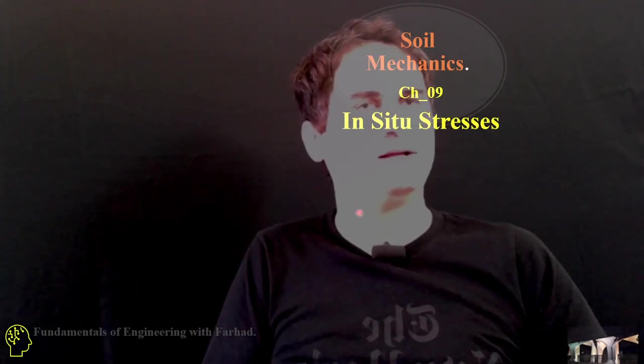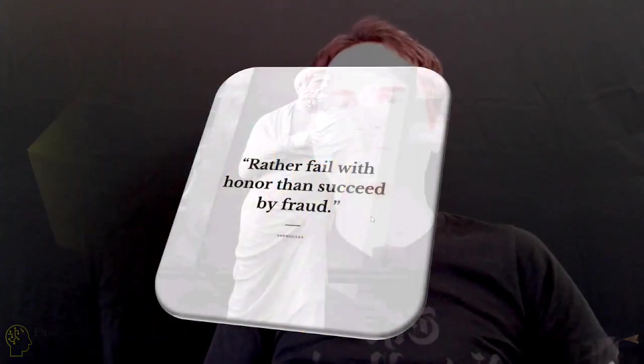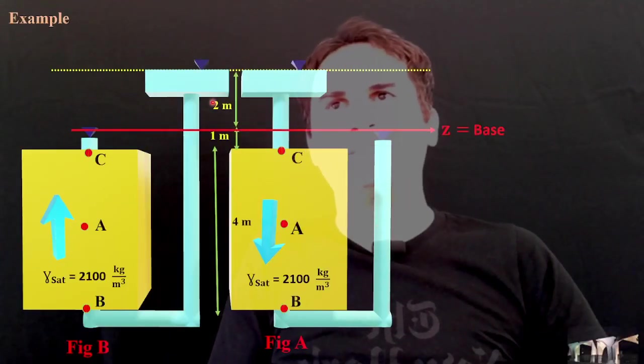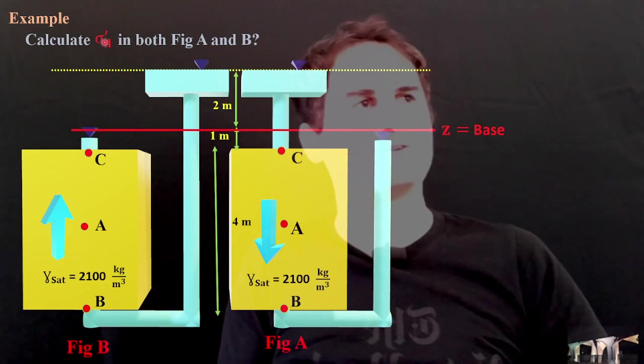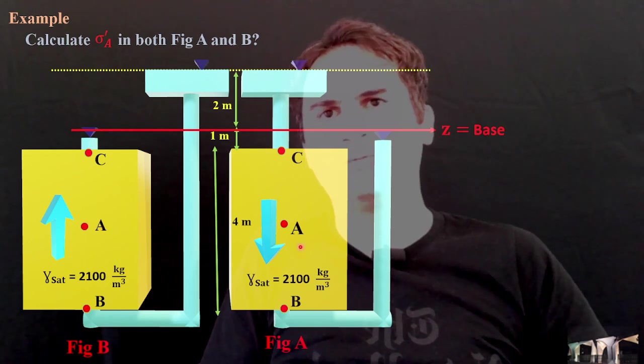Let's calculate effective stress in a soil sample. In this example, we want to calculate the effective stress sigma prime at A, which is located at the center of both layers.